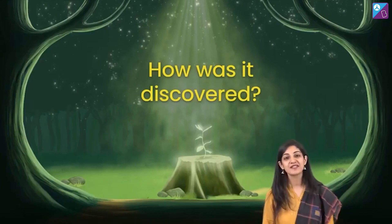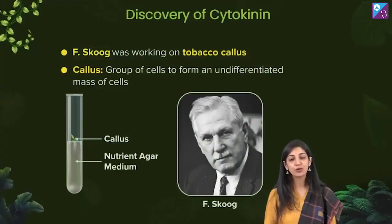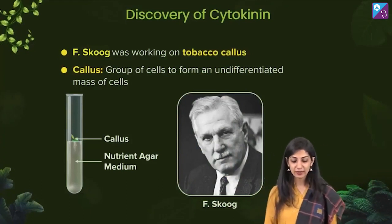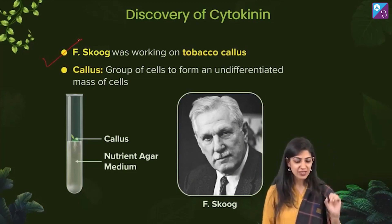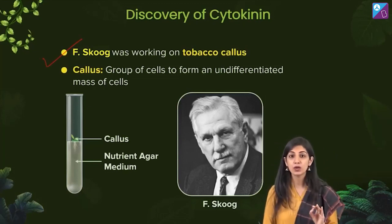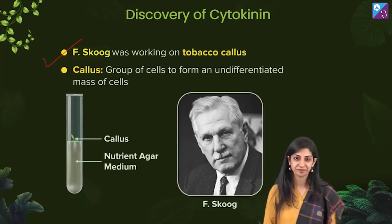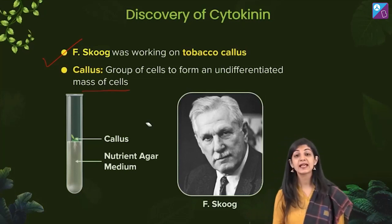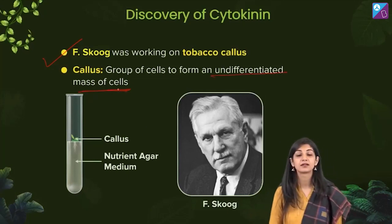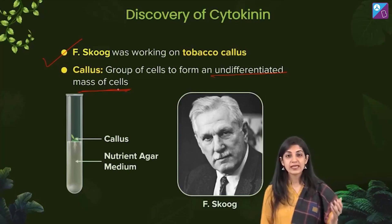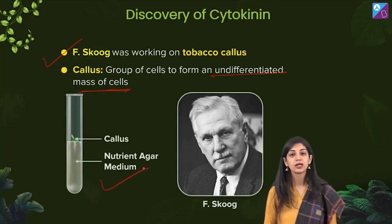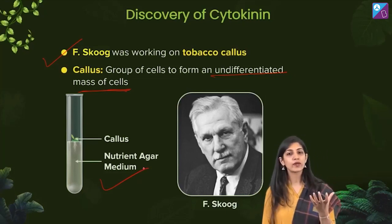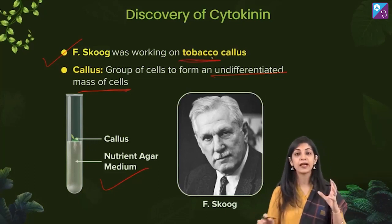It was discovered accidentally by a series of experiments. The person credited is a gentleman called F. Skoog — you can just remember Skoog. Skoog was working on tobacco plant callus. Callus is the undifferentiated mass of cells — you see callus formation in plant tissue culture. Skoog had a nutrient medium and was experimenting on callus formation from the tobacco plant.